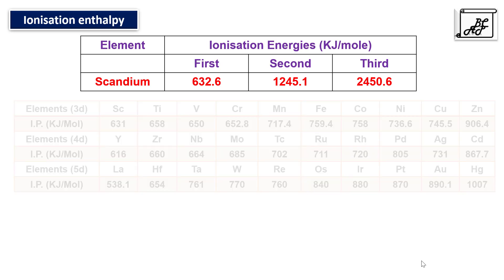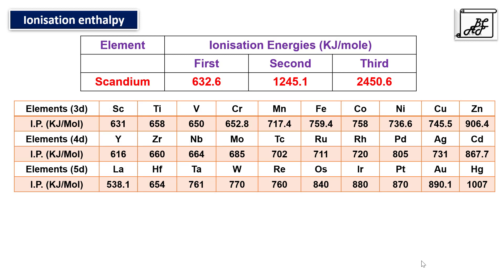If we see the first ionization enthalpies of all transition elements when moving from left to right, as nuclear charge increases it pulls the ns2 outermost electrons closer, so ionization enthalpy should increase from left to right. However, in the first transition series from scandium to zinc, electrons are added into the inner n-1 d-shell, and these electrons exert a shielding effect. So the ns2 outermost electrons are shielded more and more, and ionization enthalpy from left to right increases only very slowly.